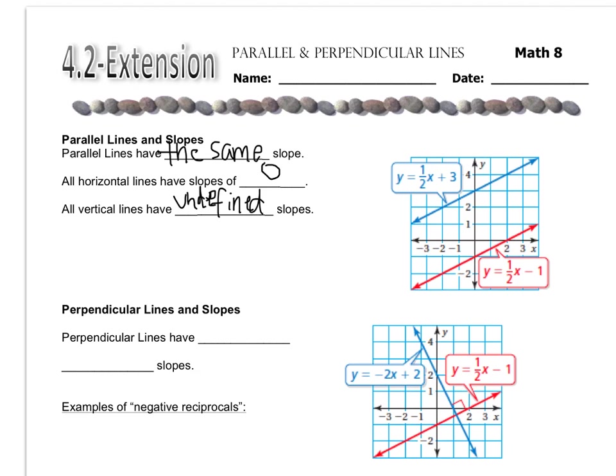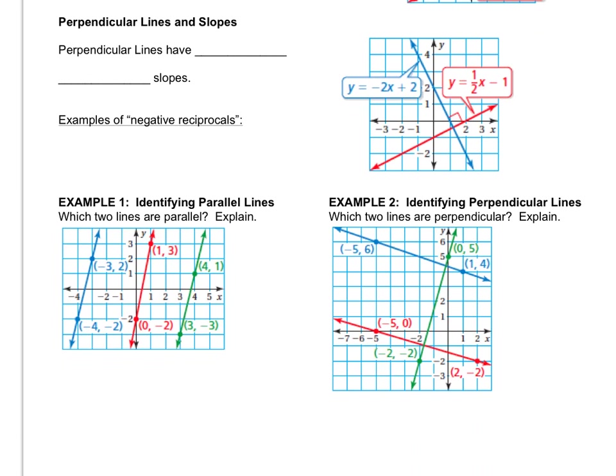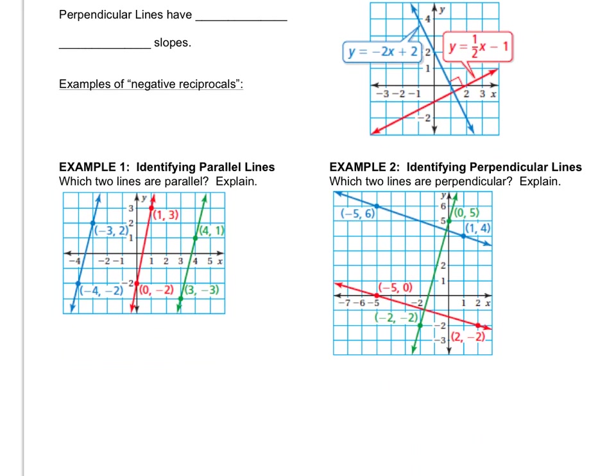So let's skip down for a second and let's look at example one where we have to identify parallel lines. So they're asking us out of these three lines, which kind of all look parallel, which lines are actually parallel. So the way that we do that is we just find the slope of each of the lines. Since it's graphed, we can just count boxes.